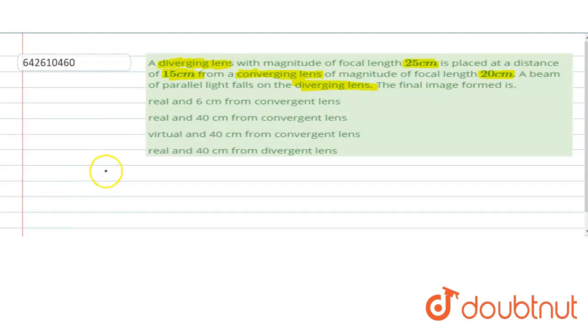So we have a diverging lens, that means a concave lens having focal length 25 cm, and a converging lens having focal length 20 cm, and the distance between the two lenses is 15 cm.